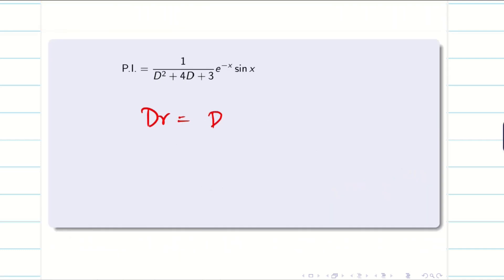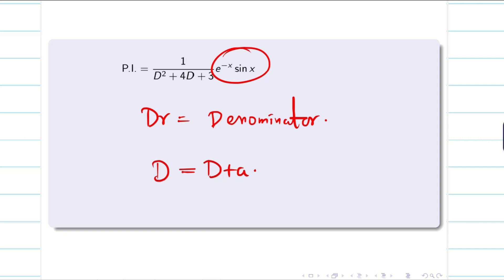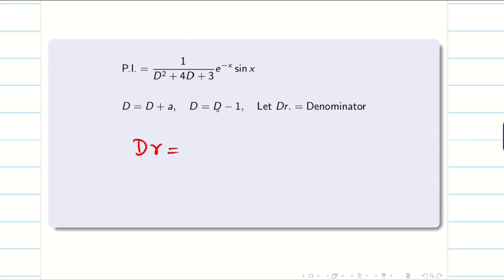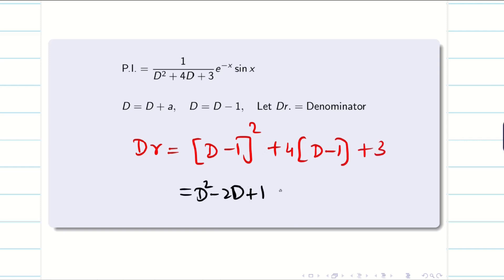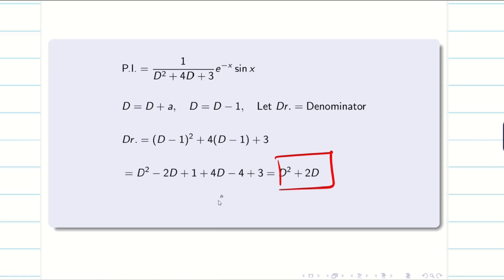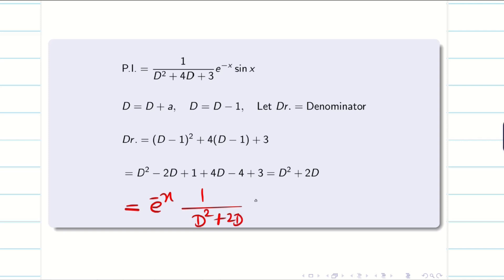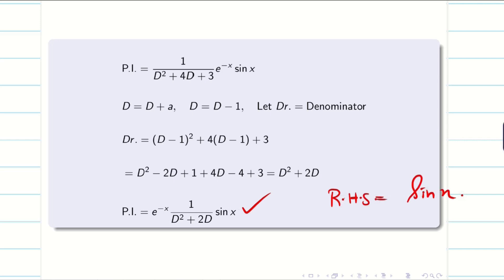For the PI, assume the denominator and apply the exponential shift. Here d is replaced by d + a, and since a = −1, d is replaced by d − 1. Substituting d − 1 into the denominator: (d−1)² + 4(d−1) + 3 = d² − 2d + 1 + 4d − 4 + 3 = d² + 2d. We push e^(−x) to the left hand side, giving 1/(d² + 2d) acting on sin x. The problem now becomes a standard Type 2.